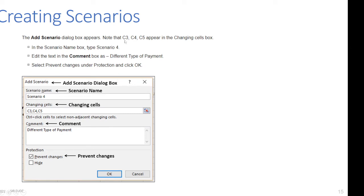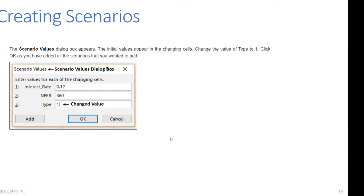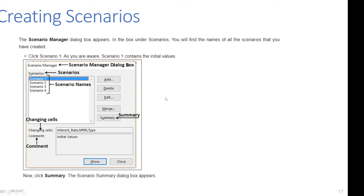Click Add again for Scenario 4. The Add Scenario dialog box appears — C3, C4, C5 appear in changing cells. In the Scenario Name box, type 'Scenario 4', edit the comment as 'Different type of payment', select 'Prevent Changes', and click OK. The Scenario Values dialog box appears with the initial values; change type from 0 to 1. Then click OK — since you have added all the scenarios you want — and the Scenario Manager dialog box appears.